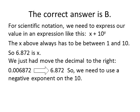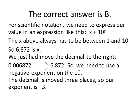So we're going to need to use a negative exponent on the 10. In other words, the 10 after the times sign. So the decimal is moved 3 places to the right, so our exponent, then, is negative 3. Our result here, then, is 6.872 times 10 to the power of negative 3.